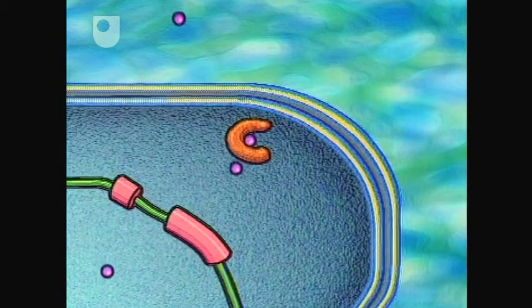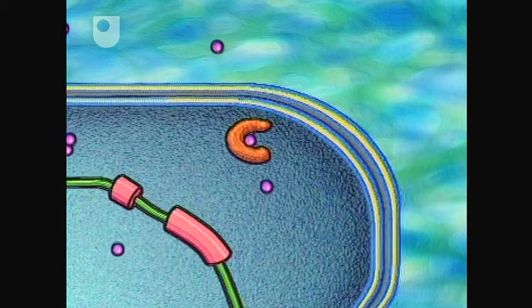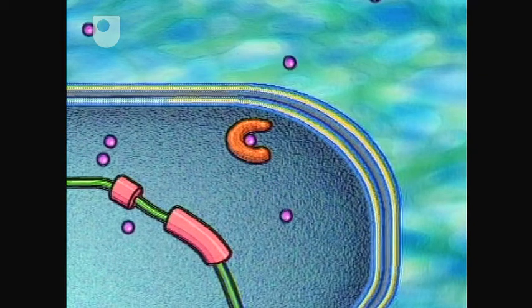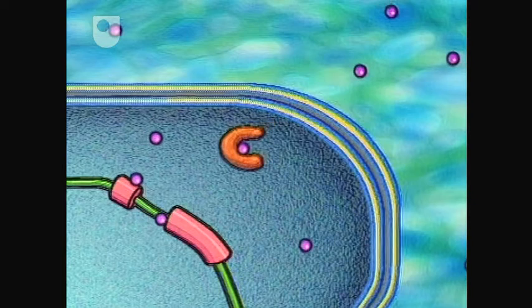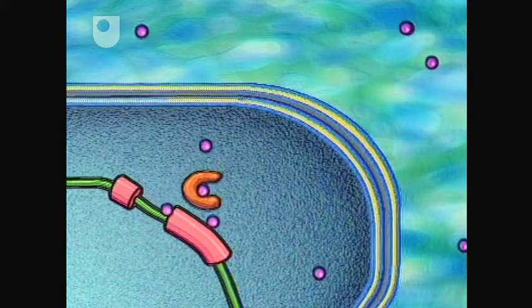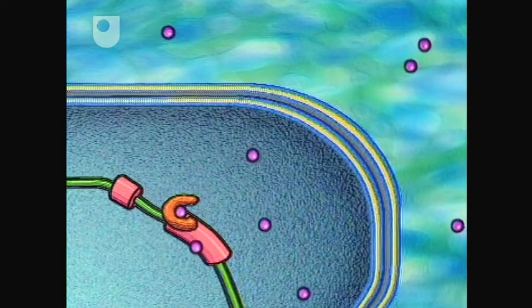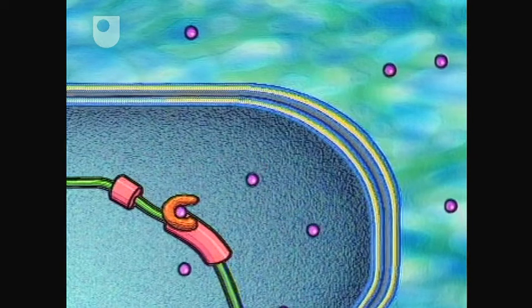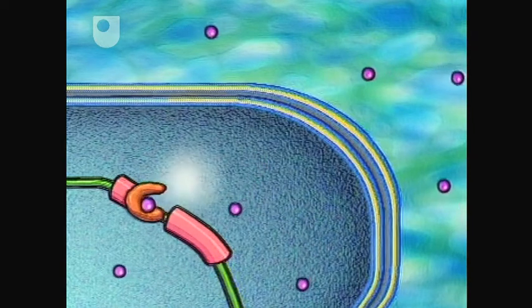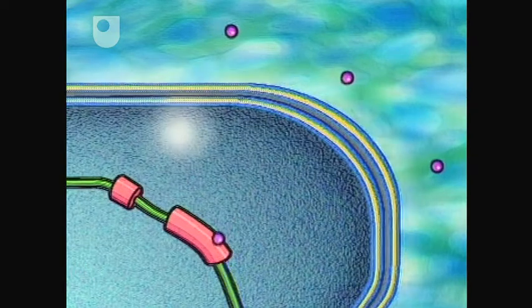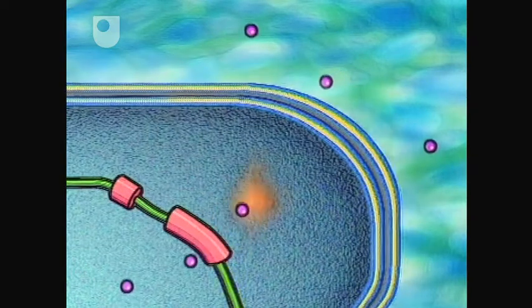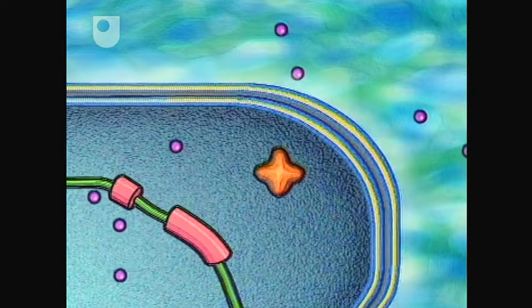The signal locks onto a receptor and forms a complex. The complex makes its way towards the cell's DNA. This stimulates a set of genes to produce two different proteins. One of these proteins gives rise to light. The other spits out more signal molecules.